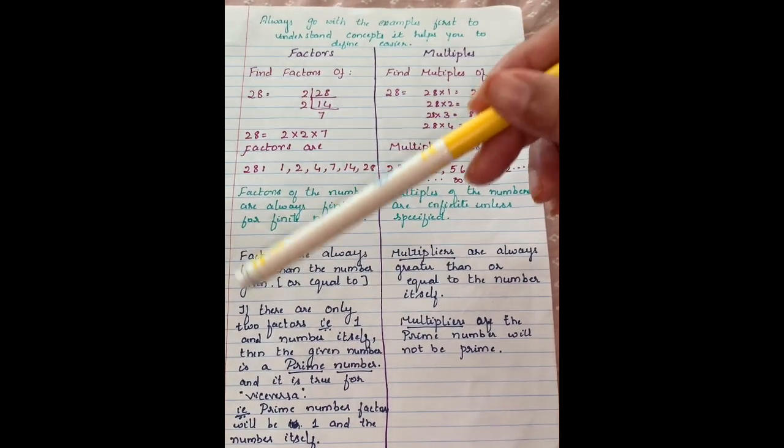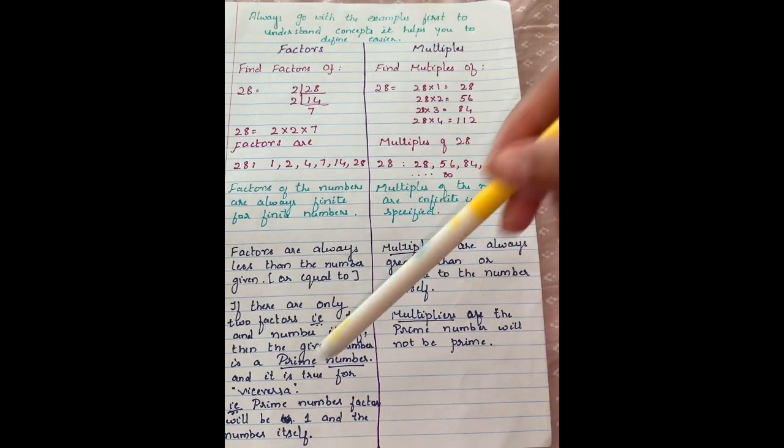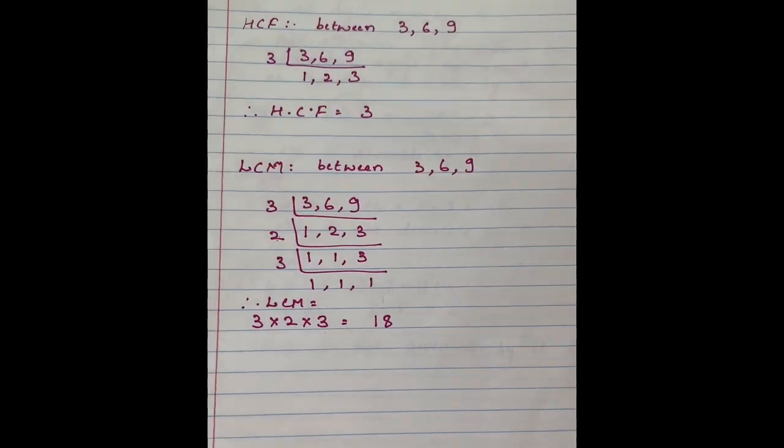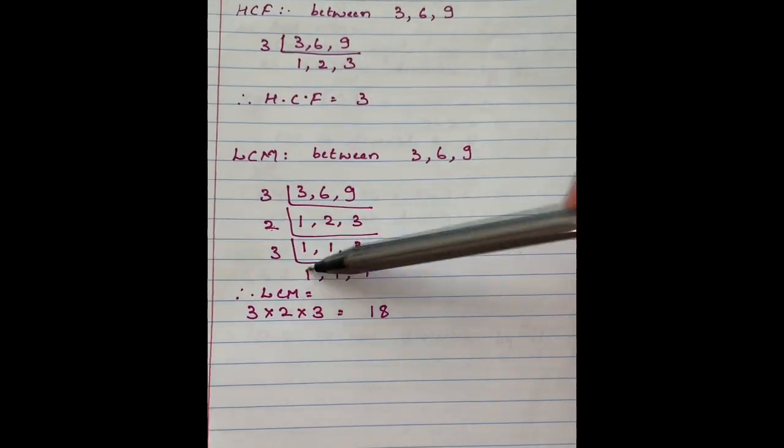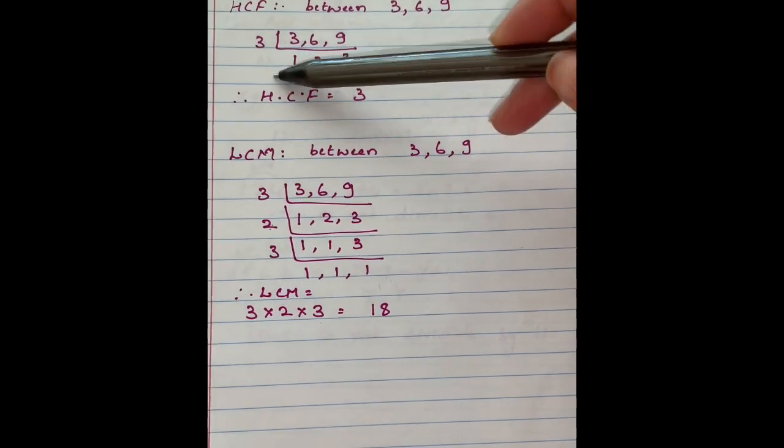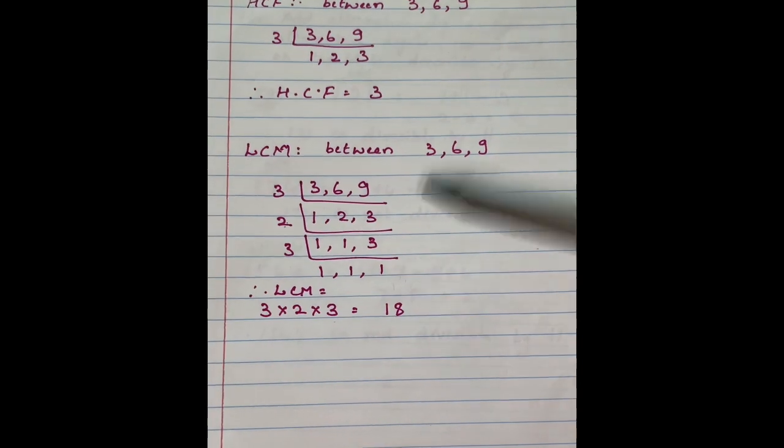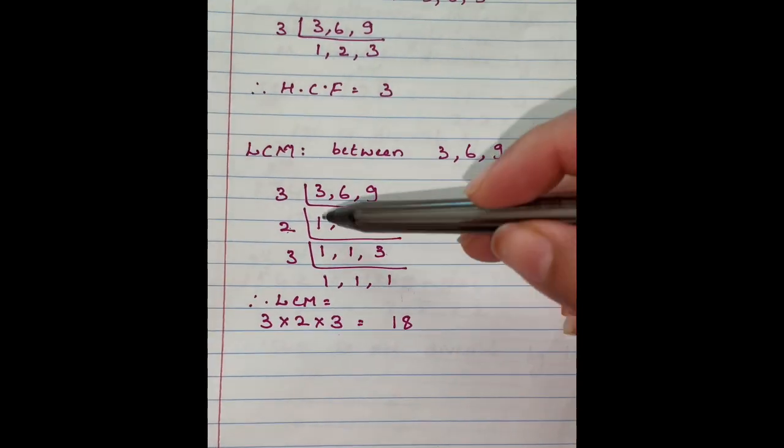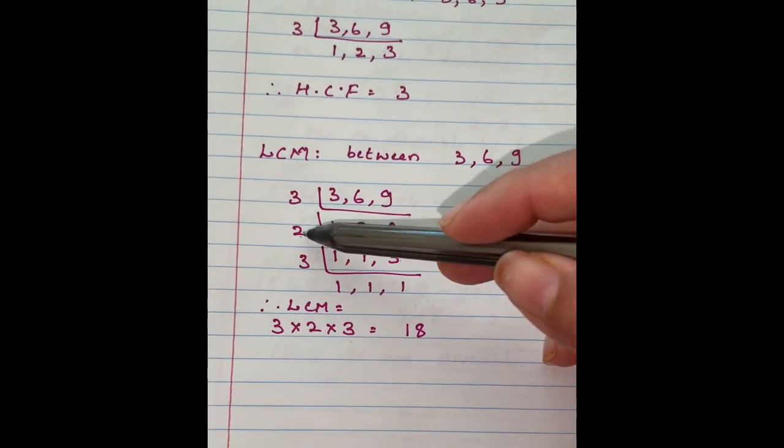Here is the difference of how to find HCF and LCM for the same set of numbers. For HCF, stop the division process once there is no common factor. For LCM, continue the process and retain the numbers which are not divisible by the chosen number.